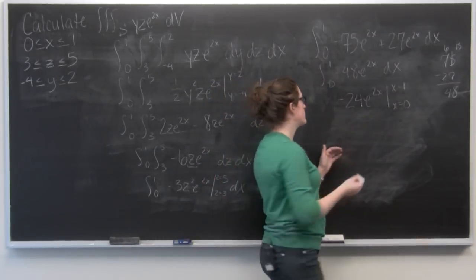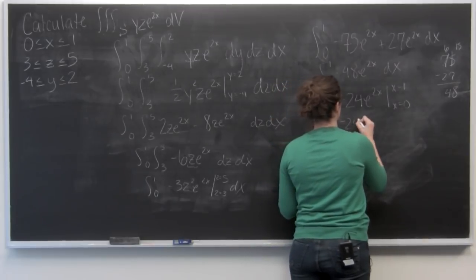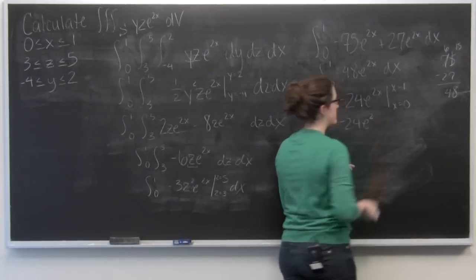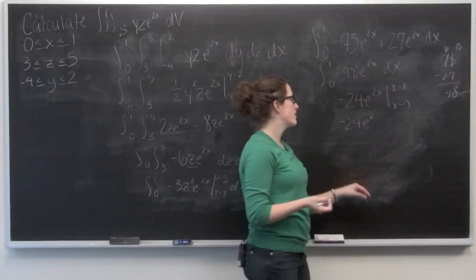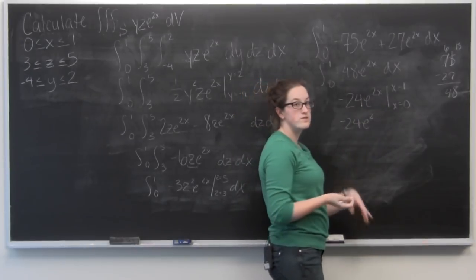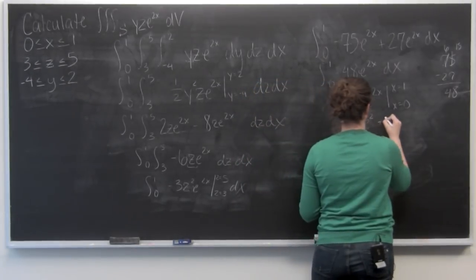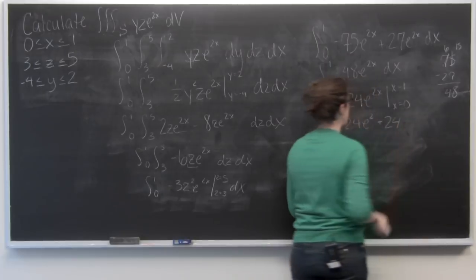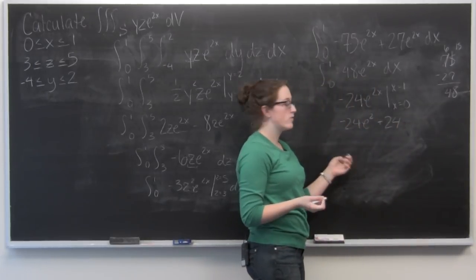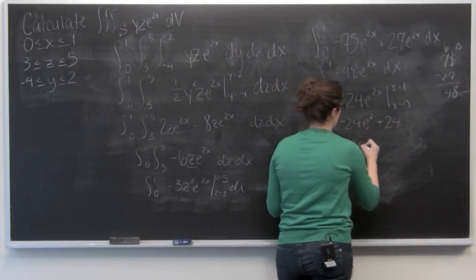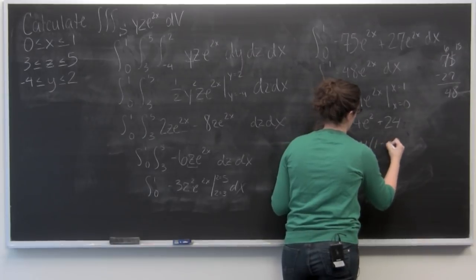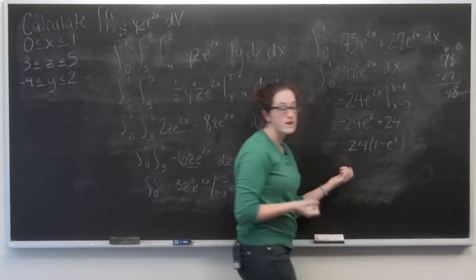We want to evaluate that from x equals 0 to x equals 1. So first I'm going to plug 1 in. This is just going to give me e squared. Now I want to plug in 0. e to the 0 is 1. So I'm just going to have 24. Now I can factor a 24 out here. And that will give me my answer.